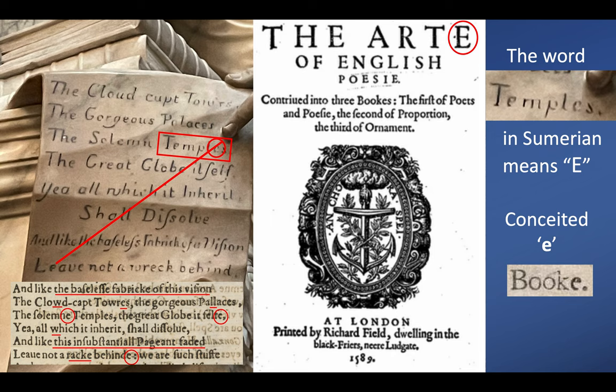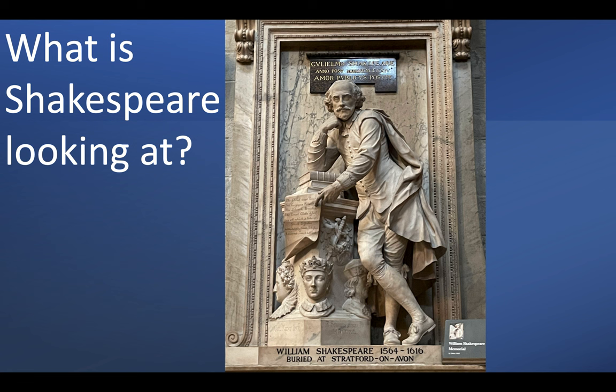Book Three of The Art of English Poesy is about the figures of rhetoric. The very first figure of rhetoric taught in this book is the figure of addition — a semantic figure of adding one letter to a word to change the meaning. That is what you're seeing here. You've already met the figure of exchange, and you'll meet that shortly.